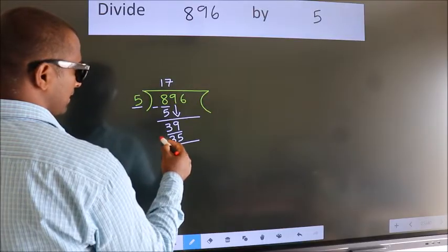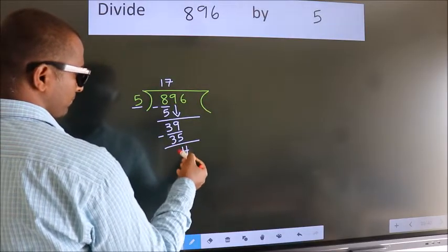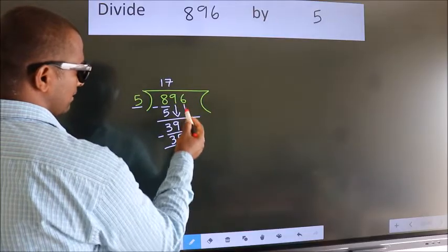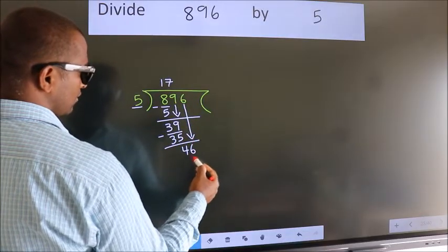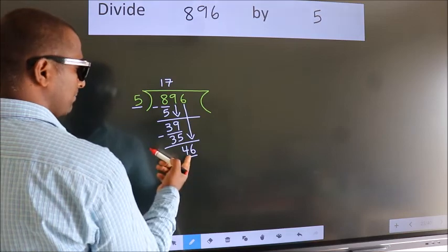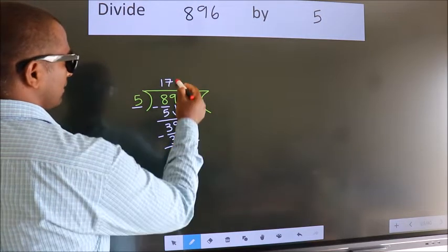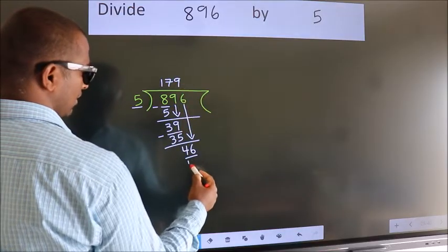Now, we subtract. We get 4. After this, bring down the beside number. So, 6 down, making 46. A number close to 46 in the 5 table is 5 nines 45.